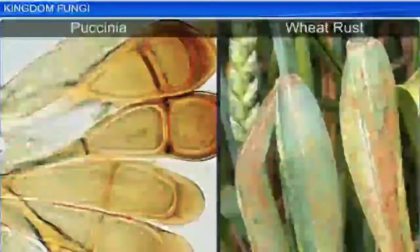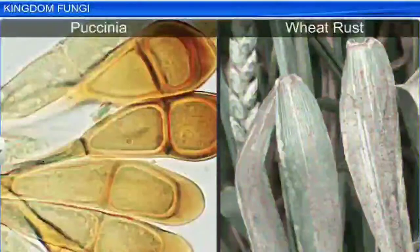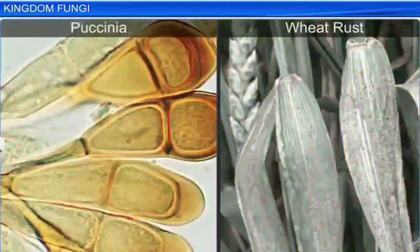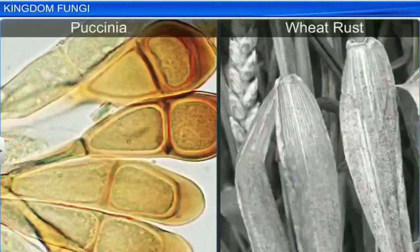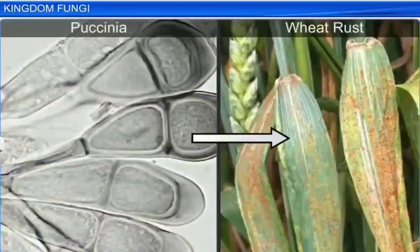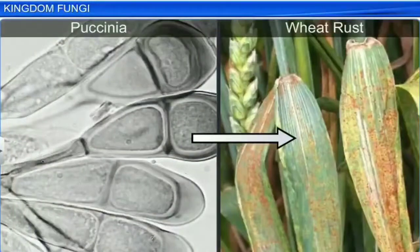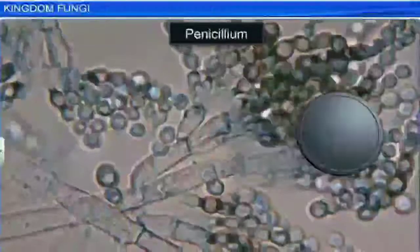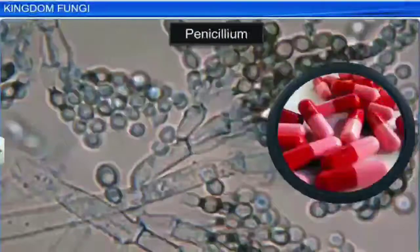While there are some fungi like Puchinia that can cause diseases like wheat rust in plants, there are also some like Penicillium that provide us with antibiotics.